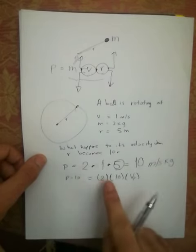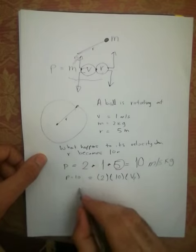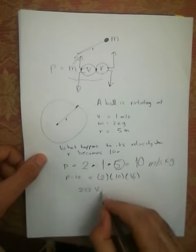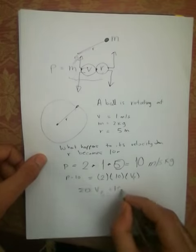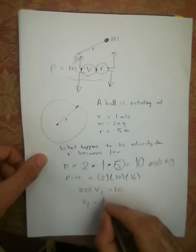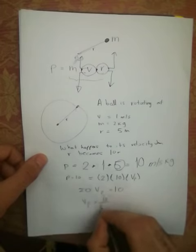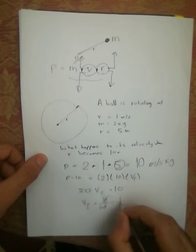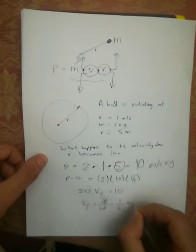And so since 2 times 10 equals 20, and the new radius here is equal to 10, obviously our new velocity is going to equal 10 over 20. It's going to be 1 over 2 meters per second.